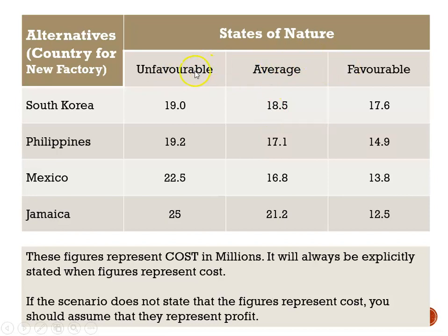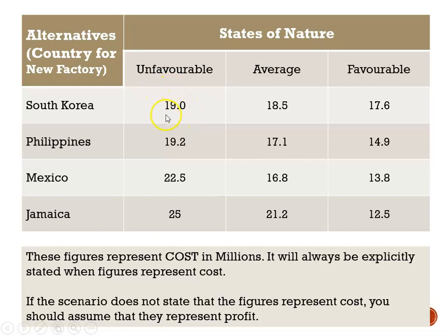The states of nature represent the uncertainty that we can face in the future in terms of the conditions — economic, social, and so forth. So, if we choose to build a factory in South Korea and conditions turn out to be unfavorable, the cost of the factory will be $19.0 million.